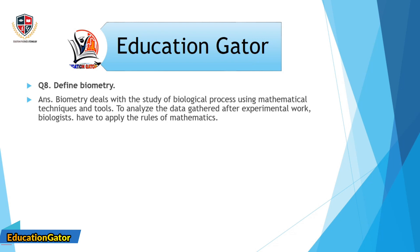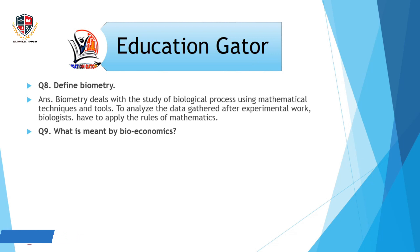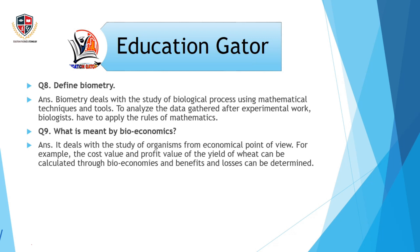Question number 8: Define biometry. Ans. Biometry deals with the study of biological processes using mathematical techniques and tools. To analyze the data gathered after experimental work, biologists have to apply the rules of mathematics.